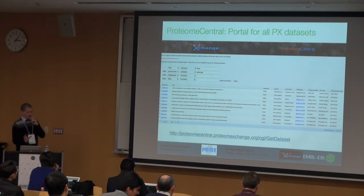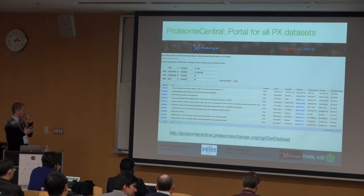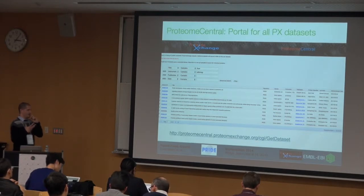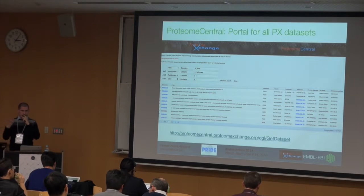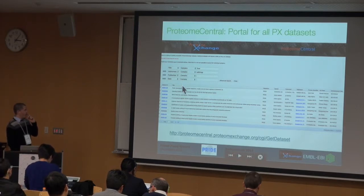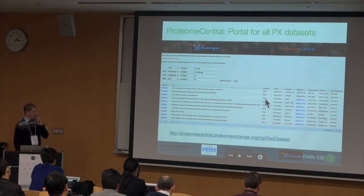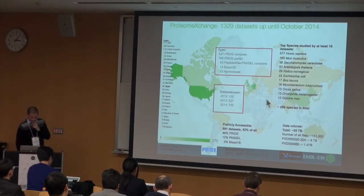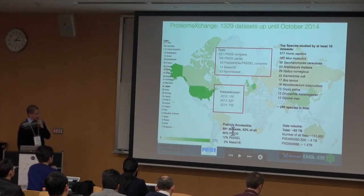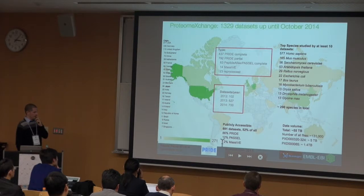After the submission process, ProteomeXchange has a system that knows when one dataset was published in one of their partner databases. There is a central point called ProteomeCentral, a web page where we track all experiments. It does not matter if the data is in PRIDE, PeptideAtlas, or other repositories — there is a column showing which repository holds the data. At the moment, more than 80% of submissions are stored in PRIDE, 12% in PeptideAtlas, and MassIVE, having recently joined, is at just 2%.